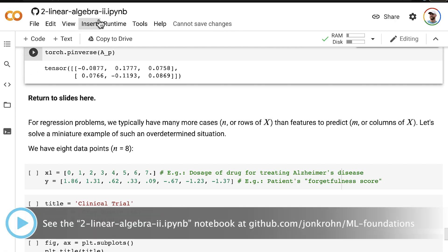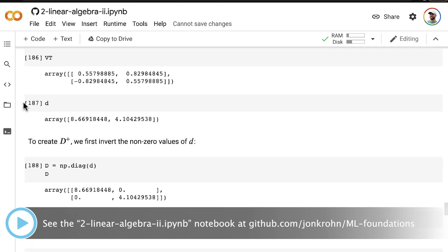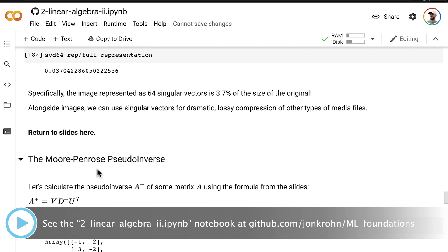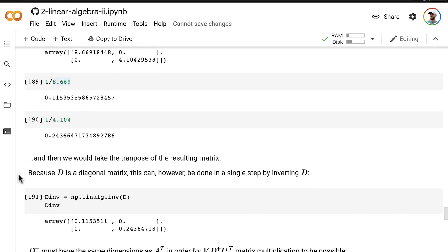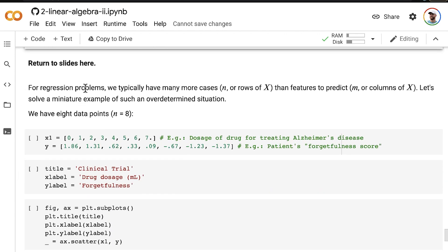Let's jump into a hands-on code demo to see this pseudoinverse in action solving for unknowns. We're back in our linear algebra 2 subject notebook and we're just below the Moore-Penrose pseudoinverse code that we executed in the preceding video. Now we're here where we're going to tackle a regression problem with the Moore-Penrose pseudoinverse. For regression problems, as I mentioned on the slide, we typically have many more cases, n or rows of X, than features to predict or m or columns of X. Let's solve a miniature example of such an overdetermined situation.